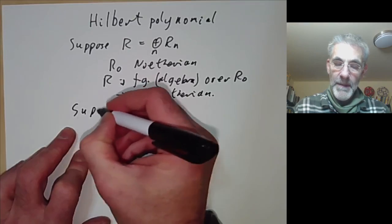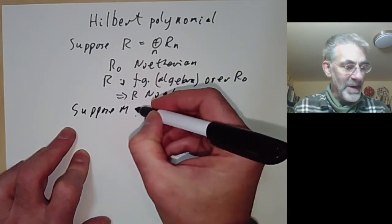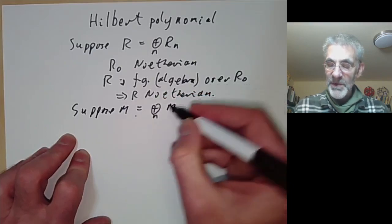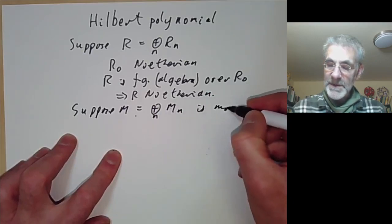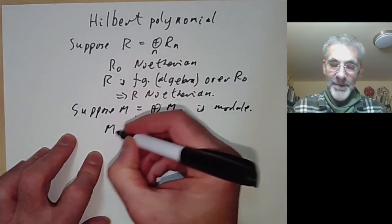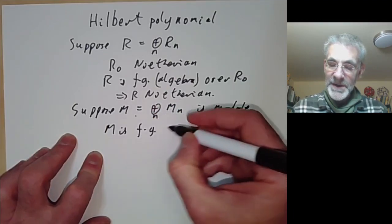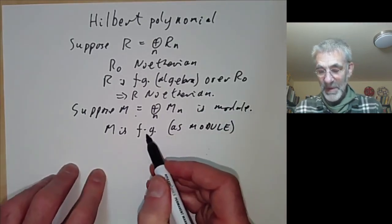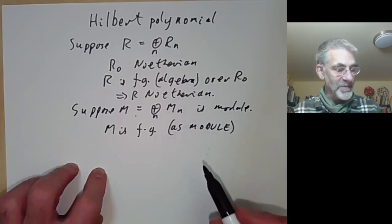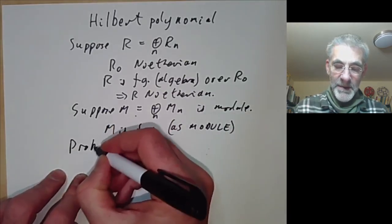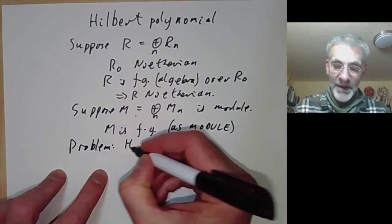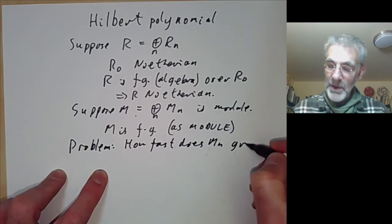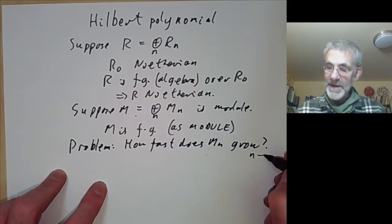We're going to suppose that M is a graded module over R, so it's a sum of graded pieces M_n. This is a module and we're going to assume that M is finitely generated as a module — remember we have to distinguish between being finitely generated as a module or as an algebra. The problem we want to discuss is how fast does M_n grow as n tends to infinity.